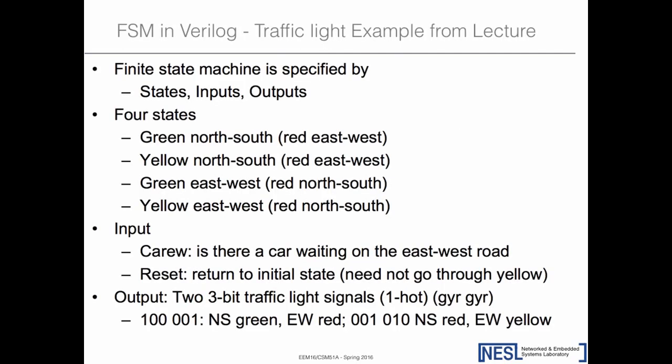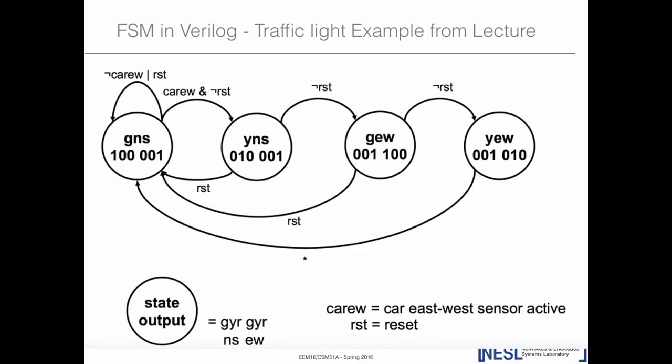The example is the traffic light FSM from lecture. You have a state machine where lights change based on the position of cars at an intersection. If cars are at east-west, lights change from green to yellow and so on. If reset happens, you go to the initial state; otherwise you go to your next state.